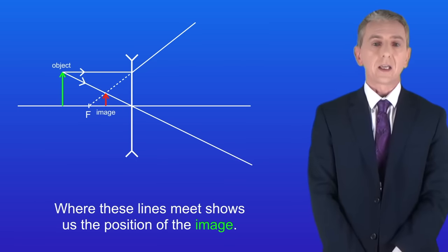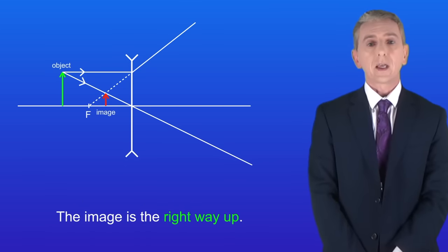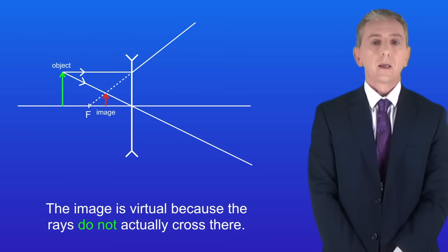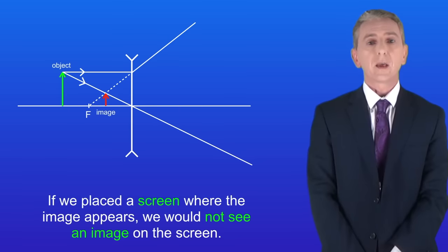Now the image has got three key properties. Firstly, the image is diminished. In other words, it's smaller than the object. Secondly, the image is the right way up. And lastly, the image is virtual, because the rays do not actually cross there. They only appear to cross there. And if we placed a screen where the image appears, we would not see an image on the screen.